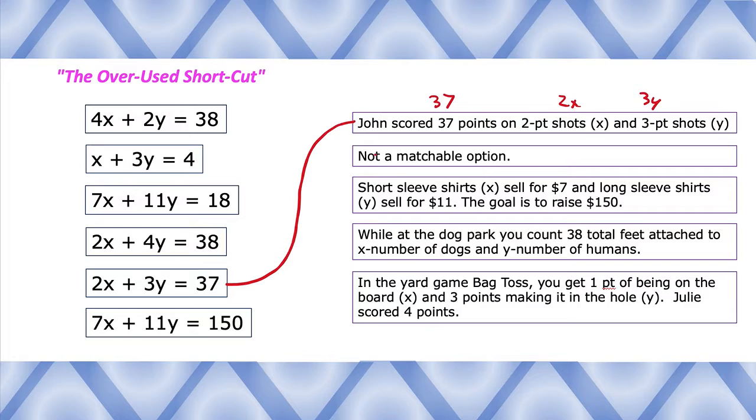Okay cool, what do we got next? Now there's two of them that have not a matchable option. Short sleeve shirts X sell for seven dollars and long sleeve shirts sell for eleven dollars, and the goal is to raise 150. So we're looking for a 7x and an 11y and a 150. Nope, nope, nope, there you are. So seven dollars for X short sleeves and eleven dollars for Y long sleeves, and the total is to get 150.